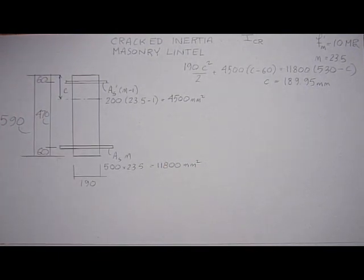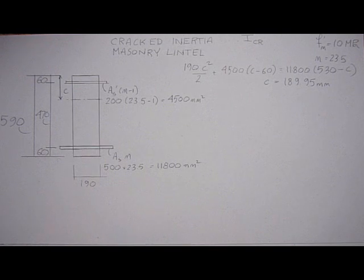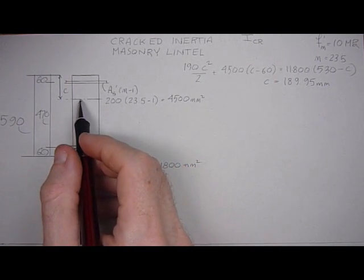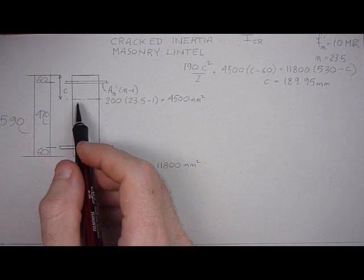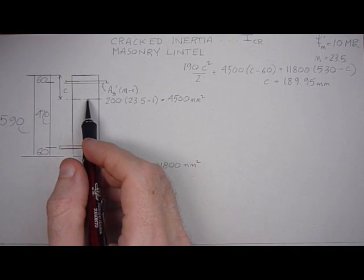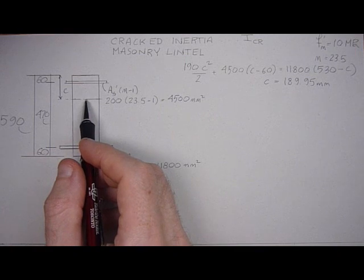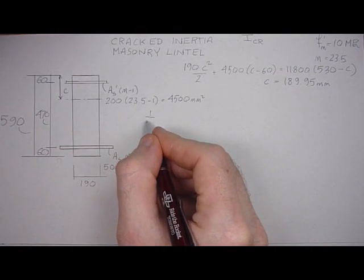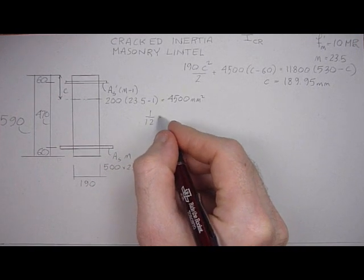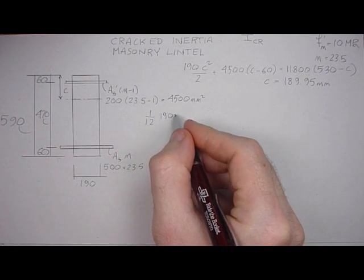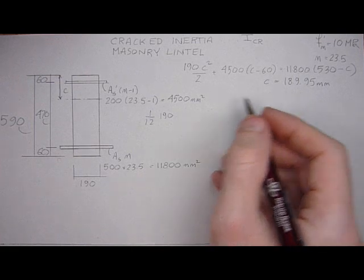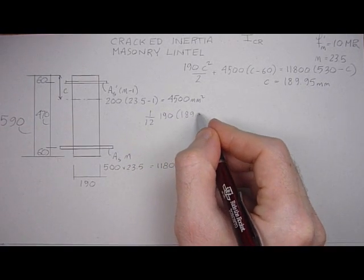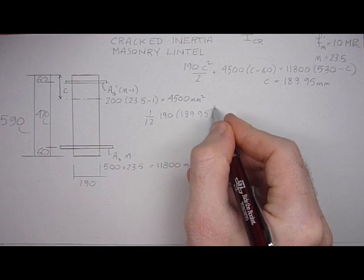And now we can calculate the inertia, the cracked inertia. So let's take inertias about the centroid. There's no parallel axis theorem needed really for this one. So we have 1/12, the base, times the height, which is C, 189.95 cubed.